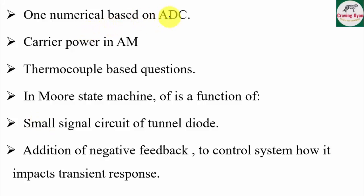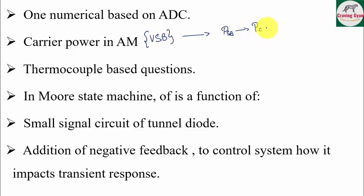The next question was a numerical based on ADC, and they asked with respect to carrier power in AM — specifically focusing on vestigial sideband modulation. In vestigial sideband modulation, you calculate the sideband power and then the carrier power. The total power is given by Pc into (1 + μ²/2) for sinusoidal, or Pc plus sideband power, where sideband power consists of both upper and lower sidebands.